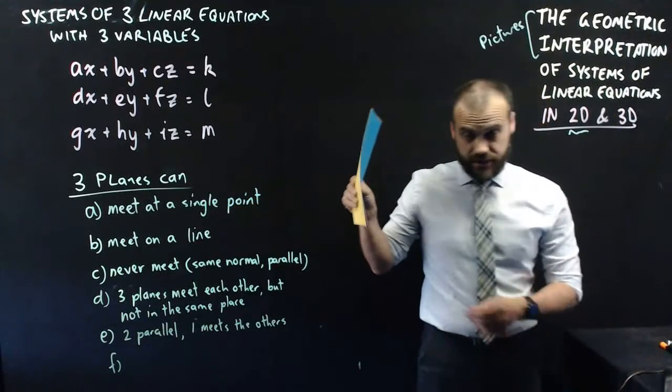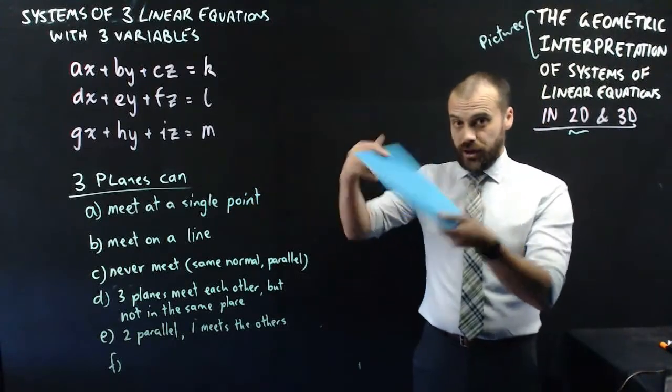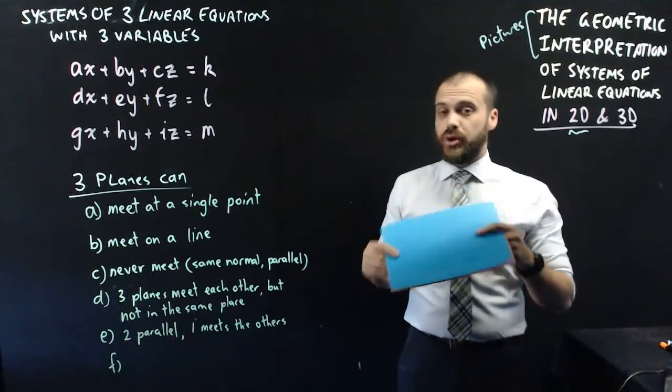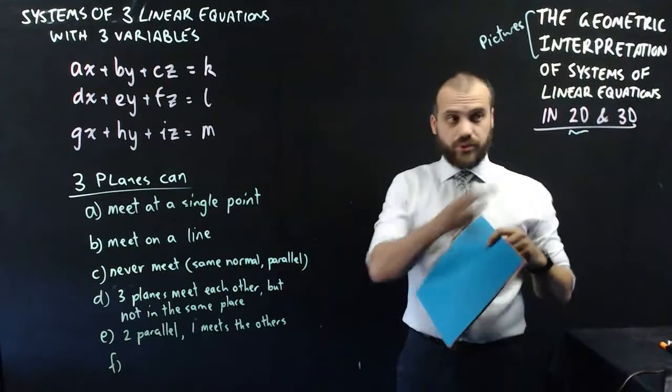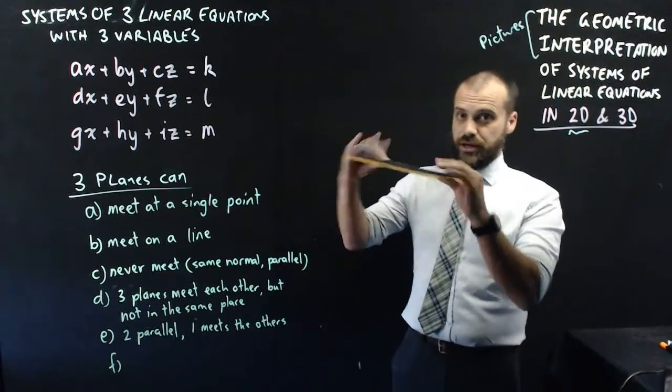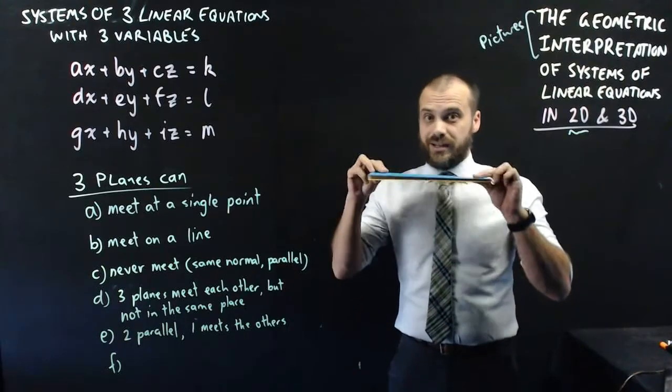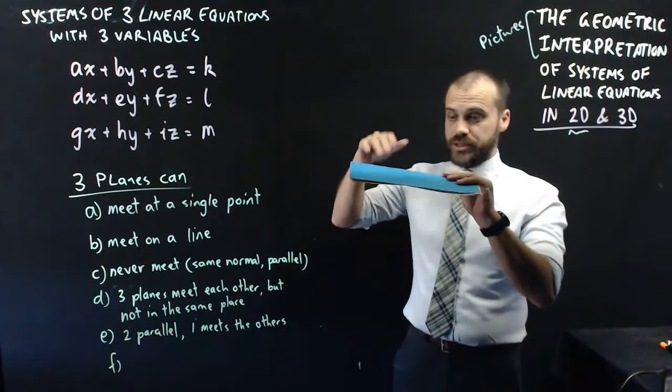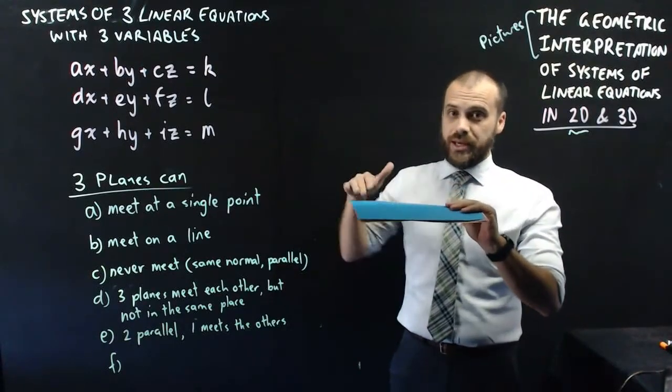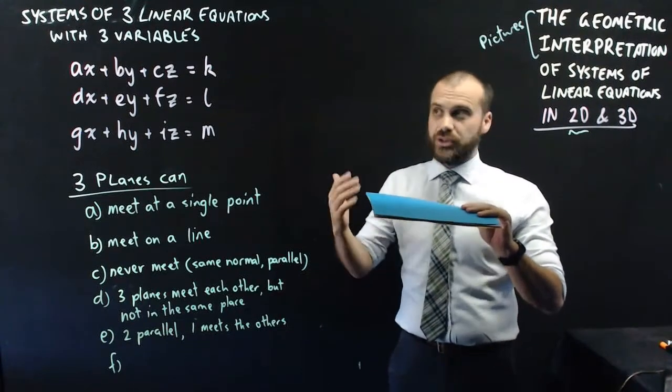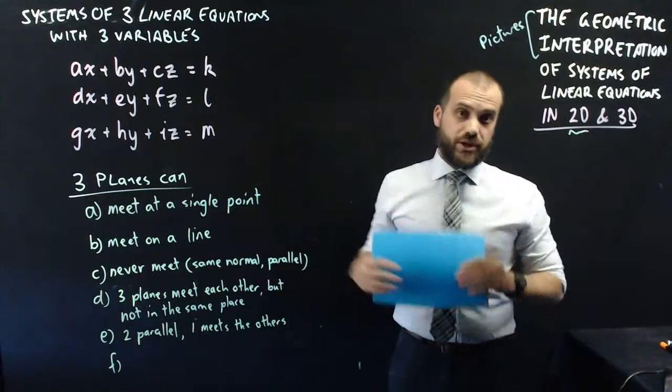And finally, we get to this. Three identical planes. So you'll remember that we had two identical lines when we were talking in 2D. We can have three identical planes as well. They are meeting at an infinite number of points. Every single point on the plane is a common point for all three of these, or as a solution to the system of linear equations.